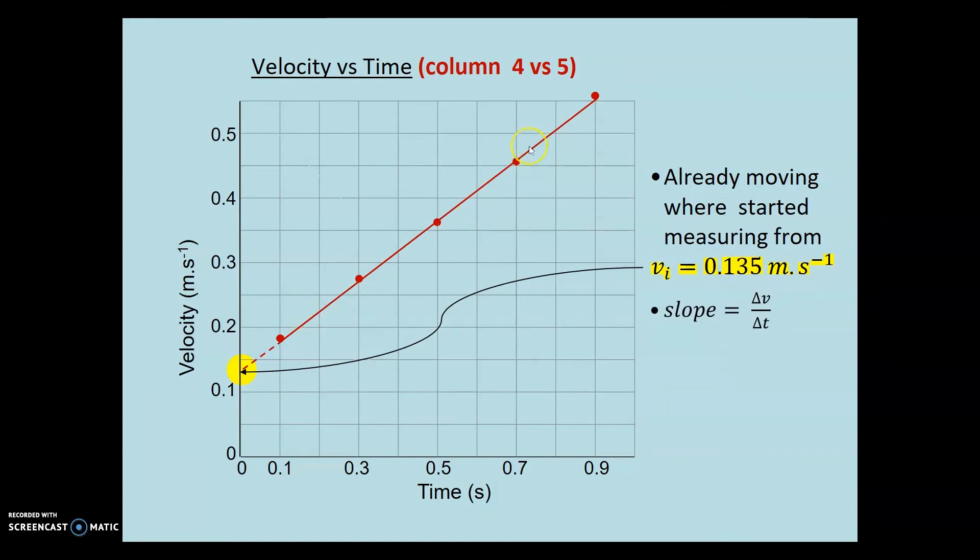Whenever we have a straight line, we want to work out the gradient or the slope of the line. By definition, it's the change in the y value over the change in the x value. It's the rise over the run.